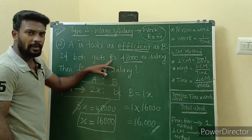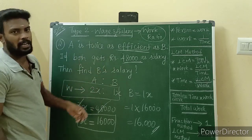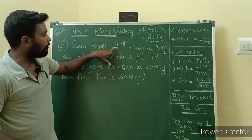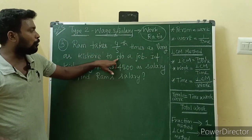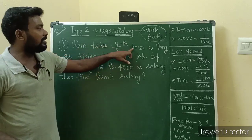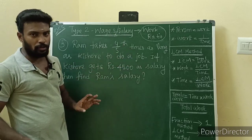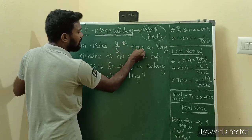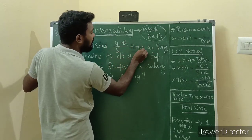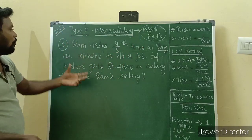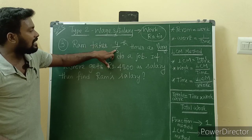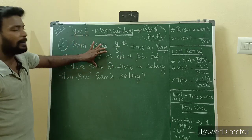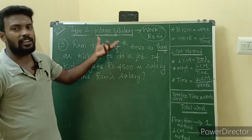In this question you compare efficiency. In the next question we will compare time. Ram takes 4/5 times as long as Kishore to do a job. Here the time is given — 4/5 times as long. Sometimes Ram takes 2 times as long as Kishore, or 3 times as long. So you compare the time here, using fractions.